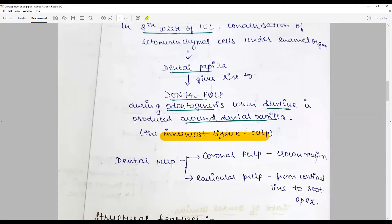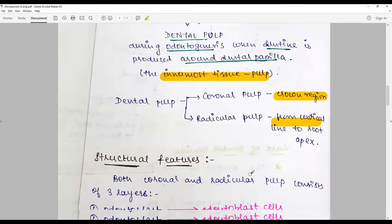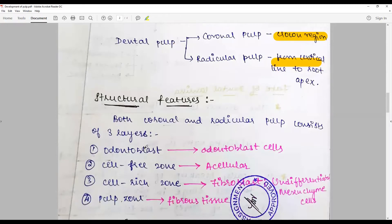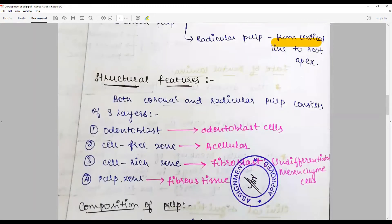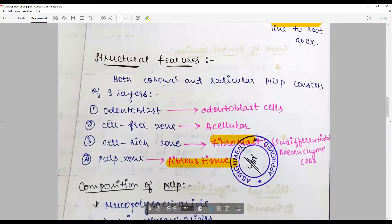The innermost cells of the dental papilla turn into the dental pulp. Dental pulp can be coronal pulp or radicular pulp - coronal pulp in the crown region, radicular pulp from the cervical line to the apex. They both consist of three layers: the odontoblast cells, cell-free zone or acellular zone, and cell-rich zone, which are made up of undifferentiated mesenchymal cells and fibroblasts of the dental papilla producing fibroblasts. The pulp zone contains mature fibrous tissues which are the secretion of the fibroblasts.